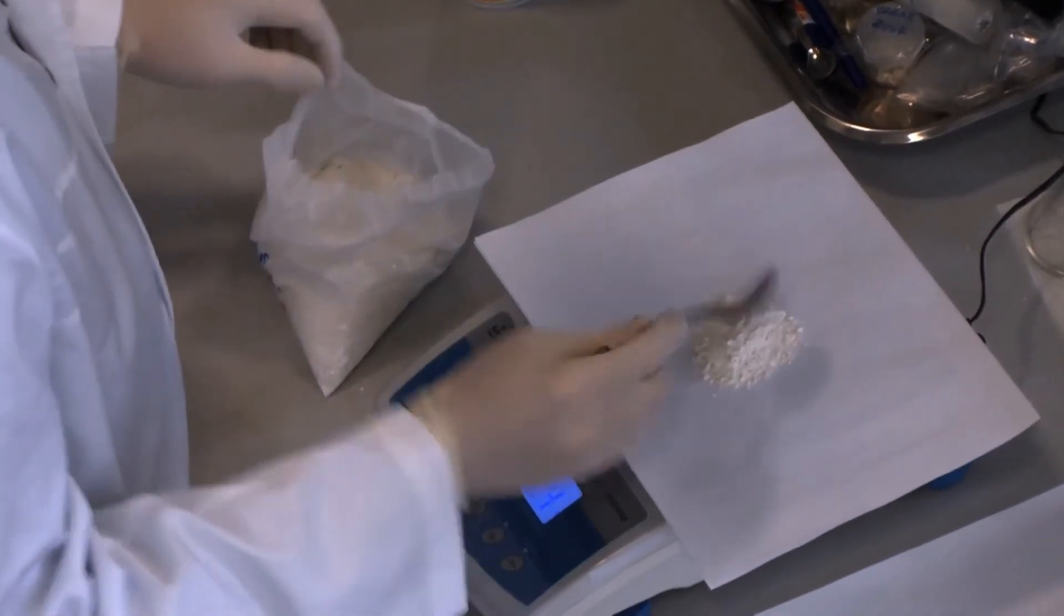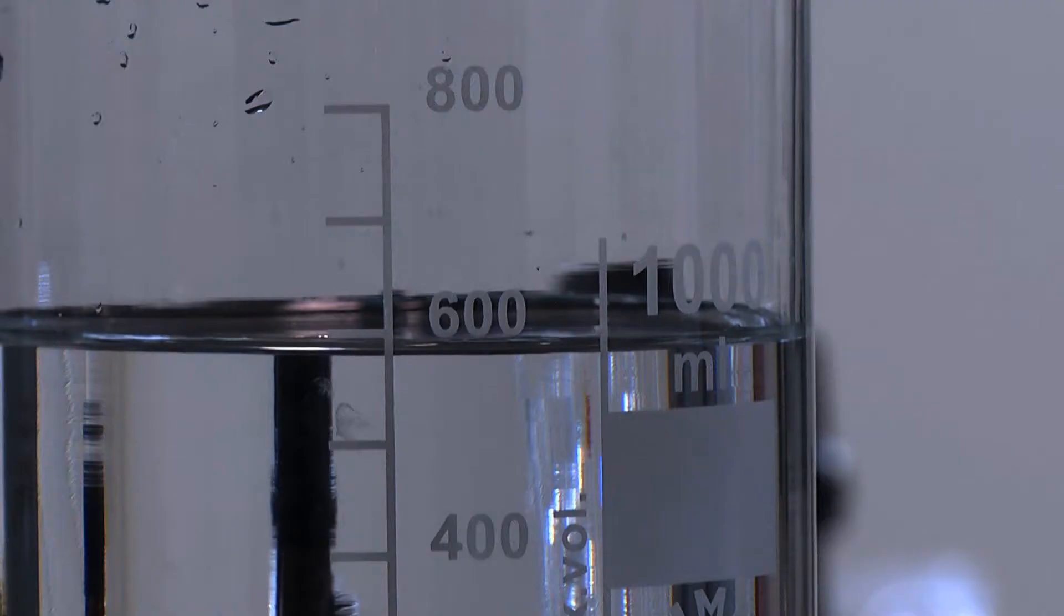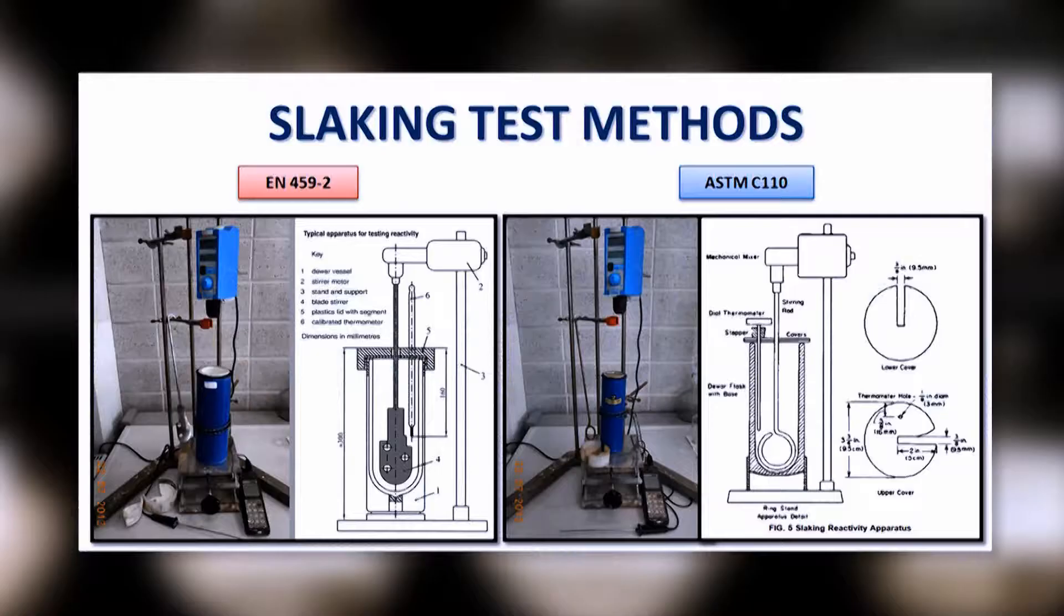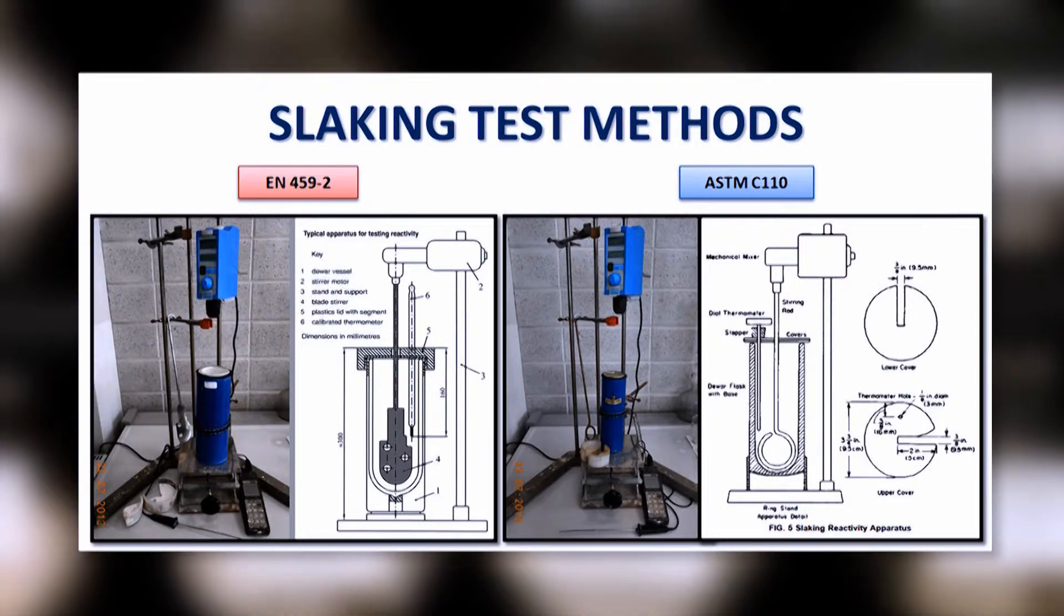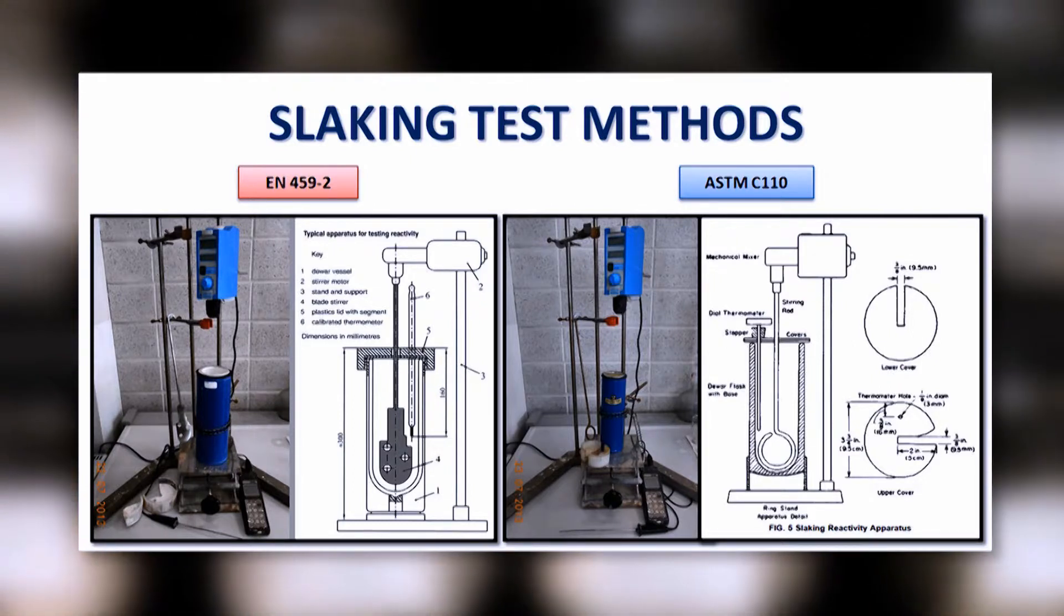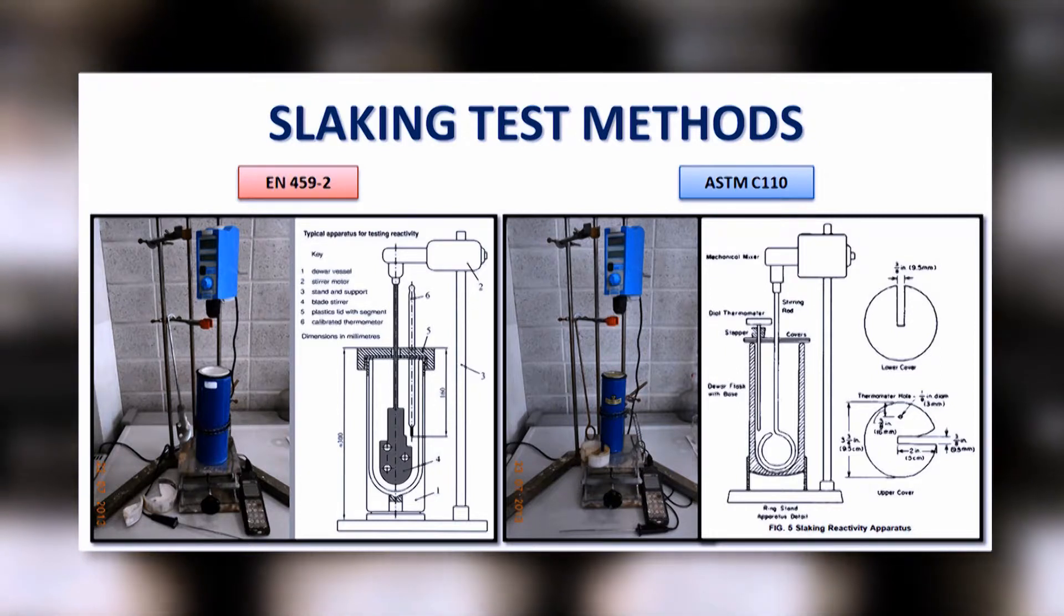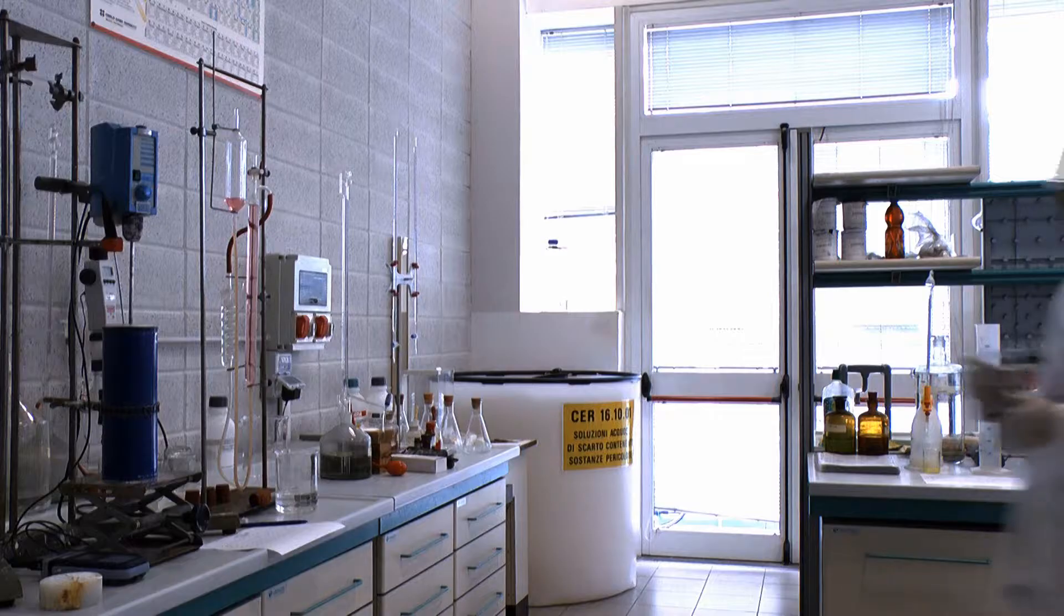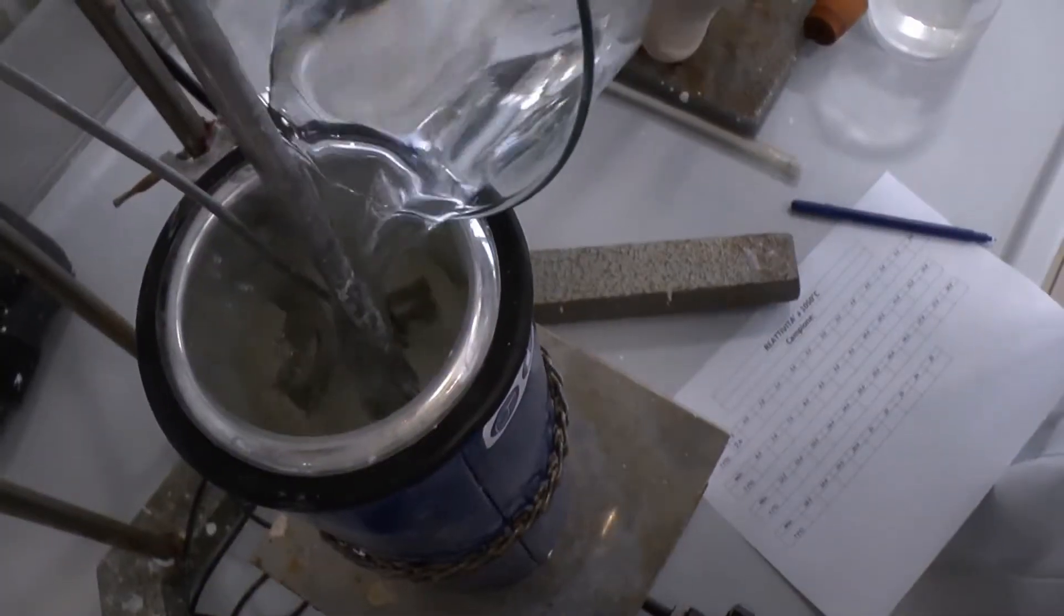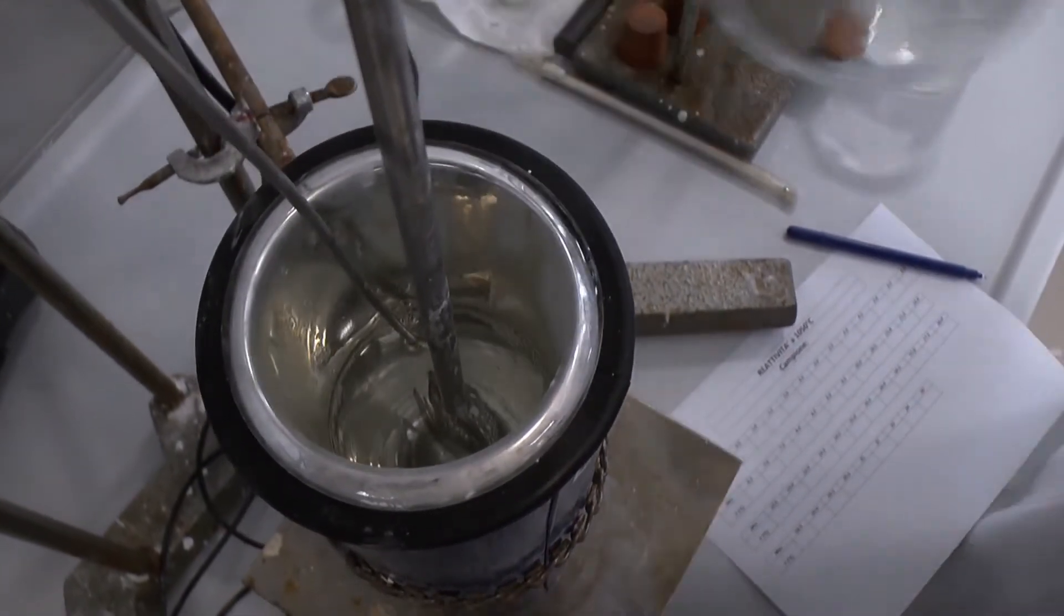The reactivity of building lime is evaluated according to the slaking test method in conformity with the European EN 459-2 or American C110-03 standards. Both standards evaluate the temperature rise occurring on reaction with water as a function of the reaction time.